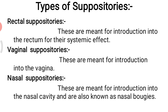Third, nasal suppositories. These are meant for introduction into the nasal cavity. They are similar to urethral suppositories — thin and cylindrical in shape — and are always prepared with glycerogelatin base. Nasal suppositories are about nine to ten centimeters long and weigh about one gram.